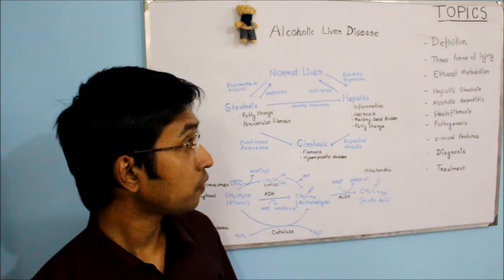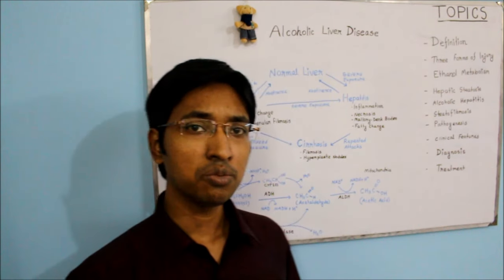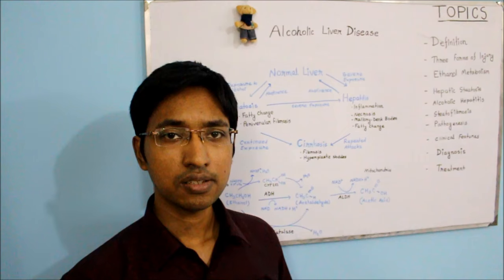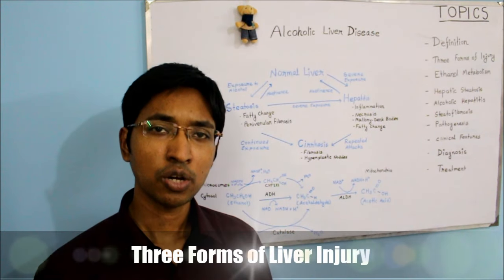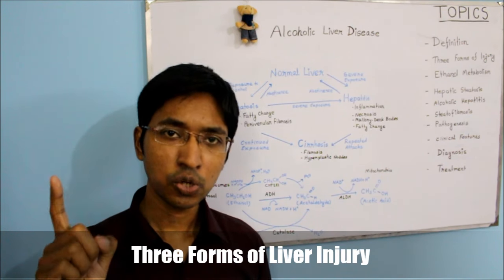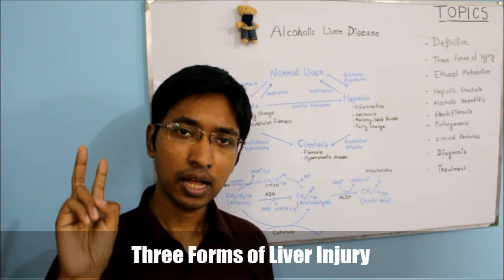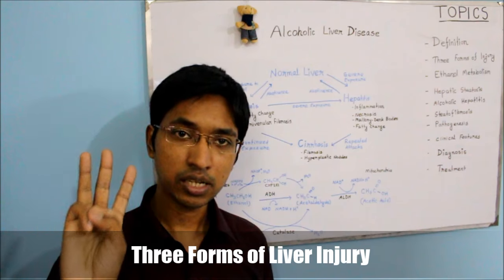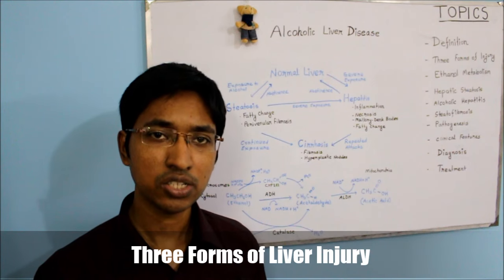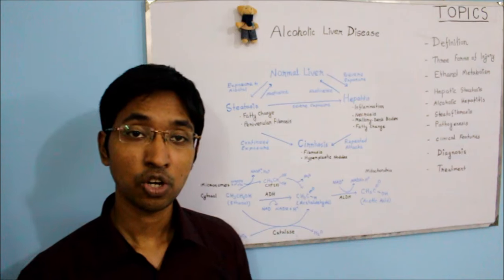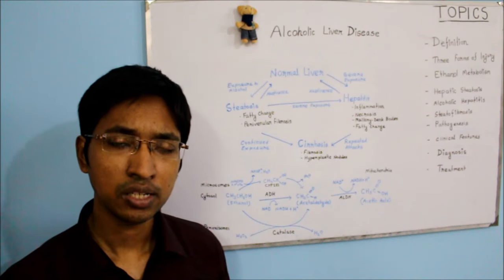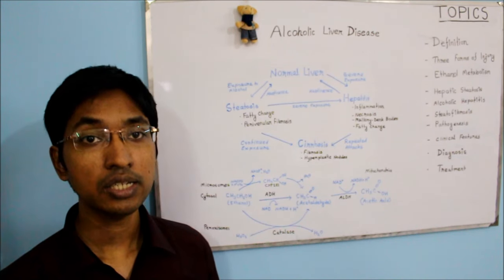Now we will move on and talk about the three overlapping forms of injury we can see in this disease. The three forms are: hepatic steatosis (or fatty liver), alcoholic hepatitis, and steatofibrosis. In your textbook you will see that in the later stages of steatofibrosis there is also development of liver cirrhosis. These three forms of liver injury are interrelated.